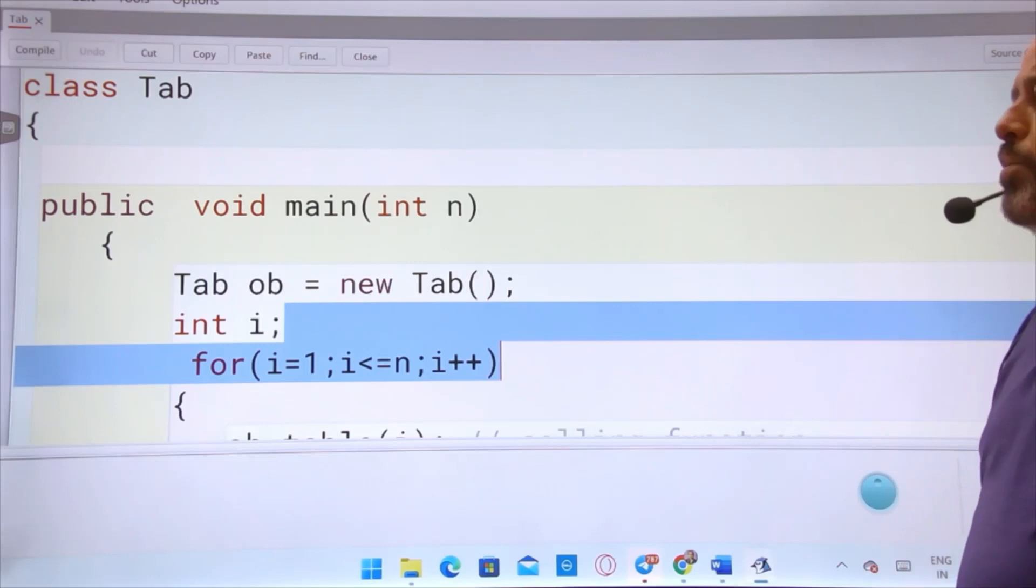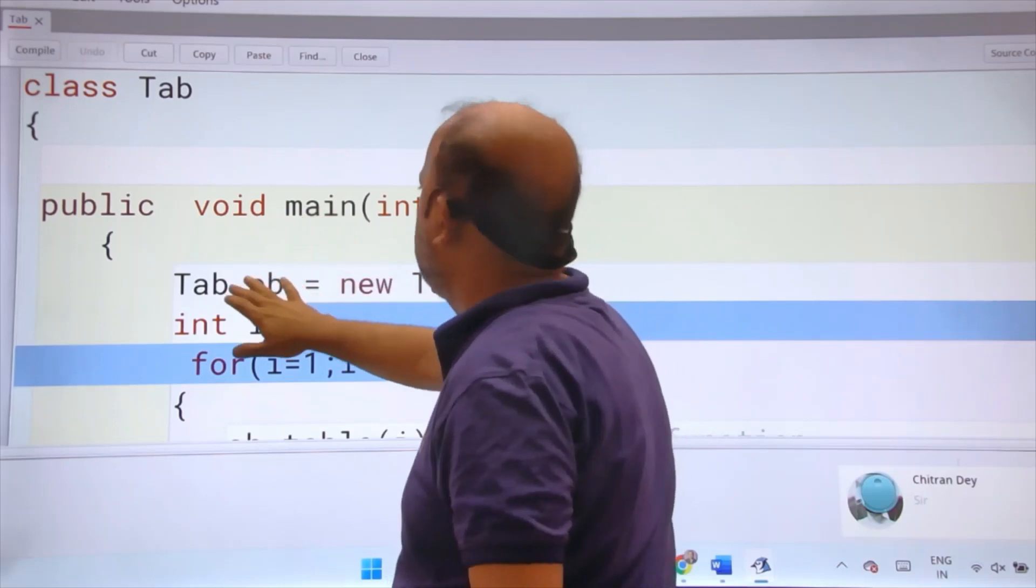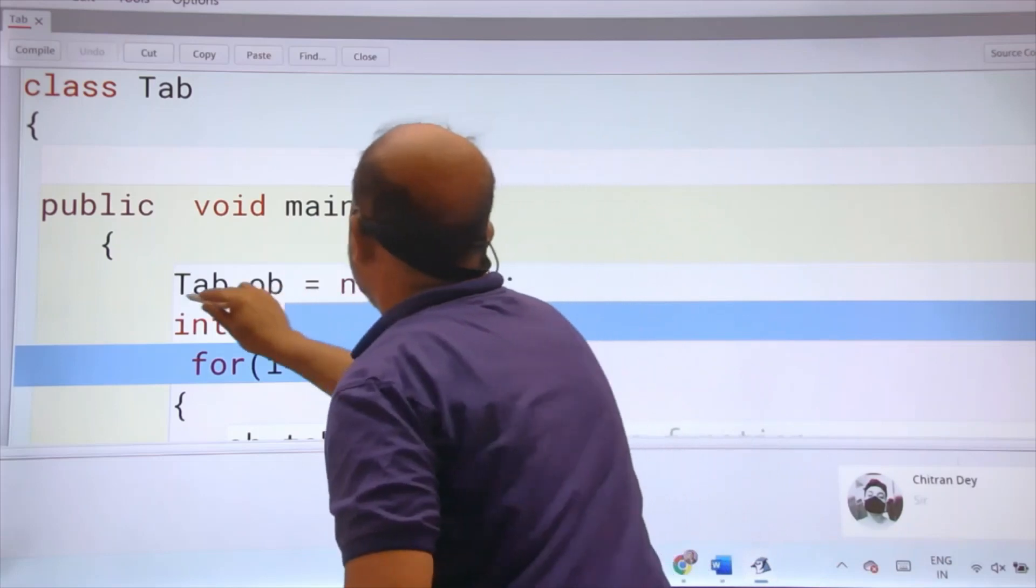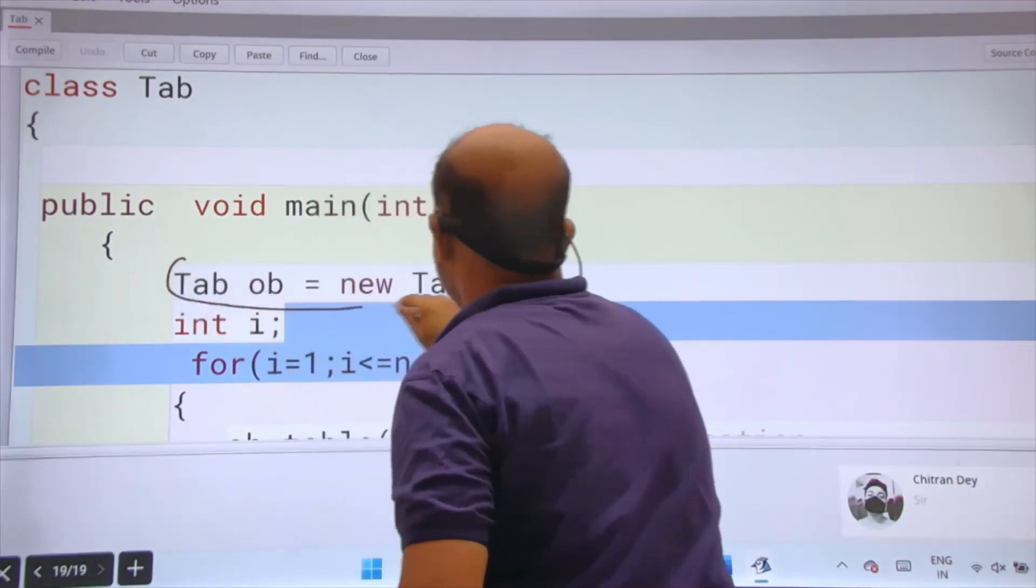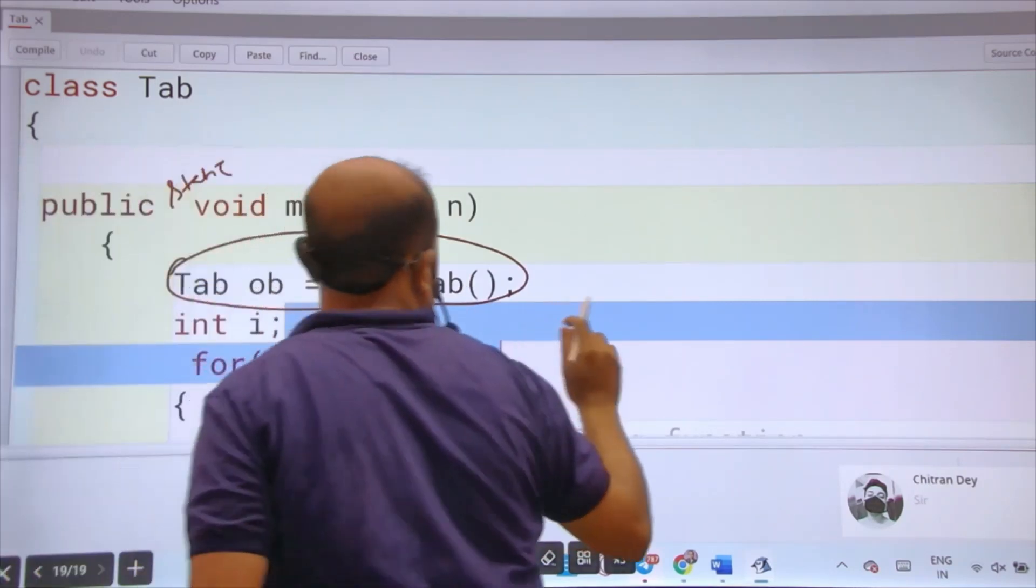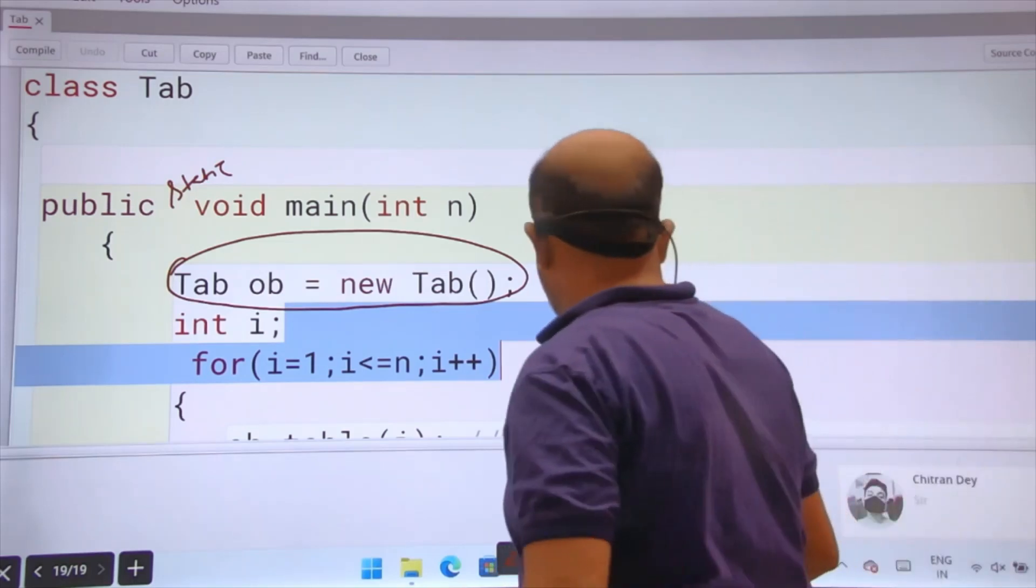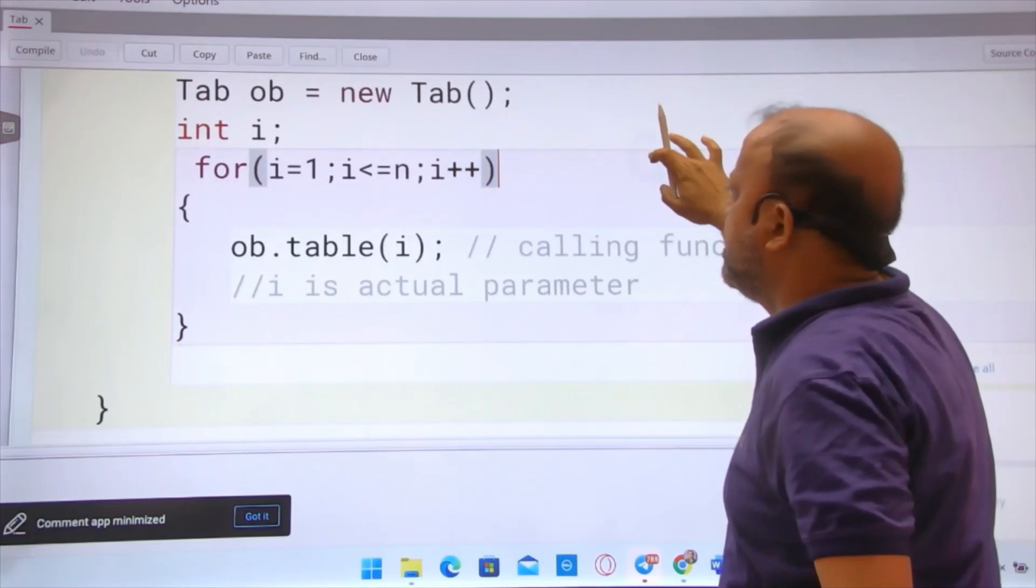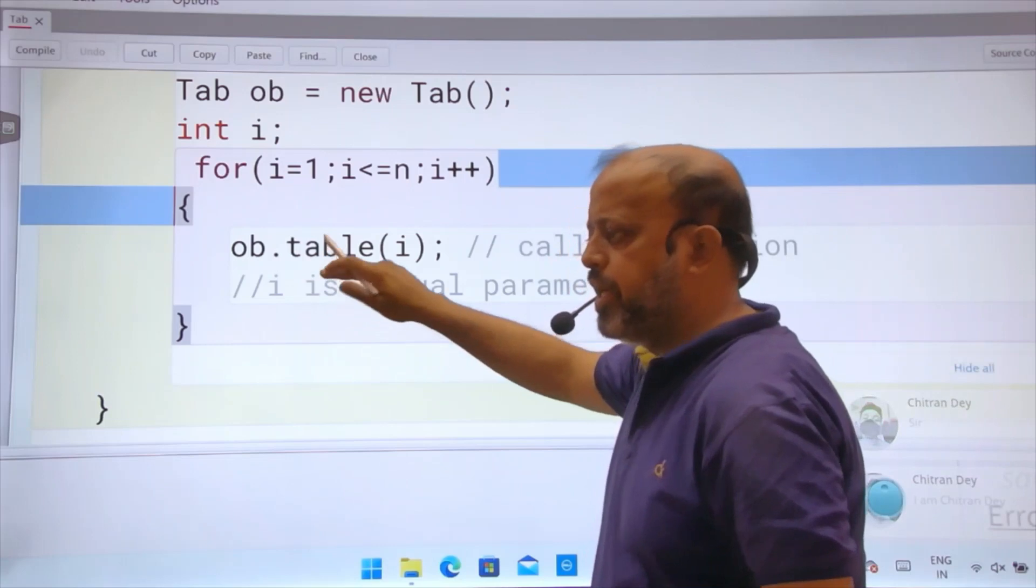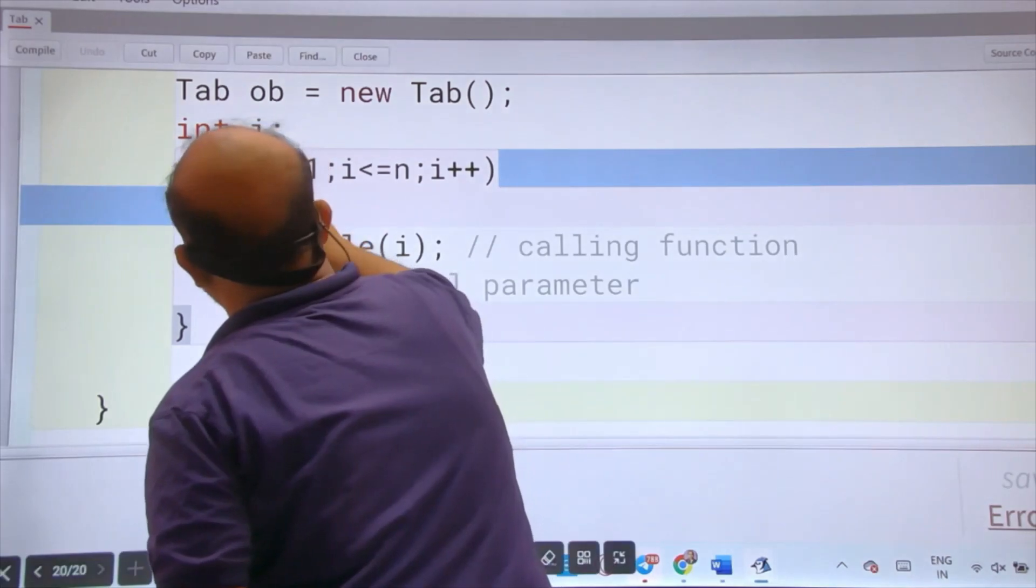We will be printing table from 1 till n. Look, we don't use static public void main, right? This Tab ob object making, some schools try, some don't. If you are using for loop 1 to n, if you are creating object ob dot table i. If you are not creating object, simply you write table i. This ob is not required.